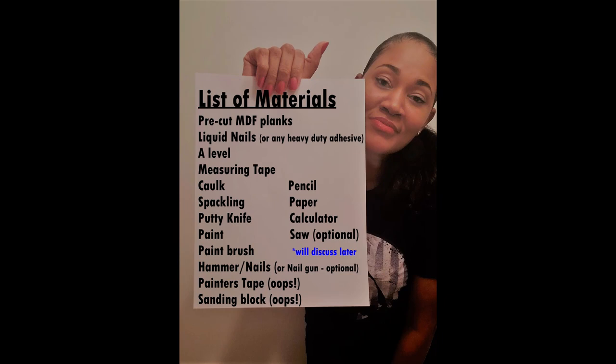You'll need a level, measuring tape, caulk, spackling, putty knife, paint. This is the paint that you are going to be painting your entire wall when it is done so that is completely your preference. Of course you'll need a paint brush, hammer nails, or a nail gun. That's optional. You'll need a pencil, paper, and a calculator of course to help you with the math.